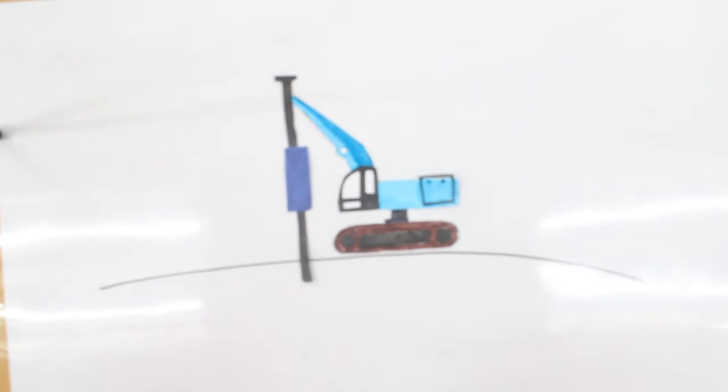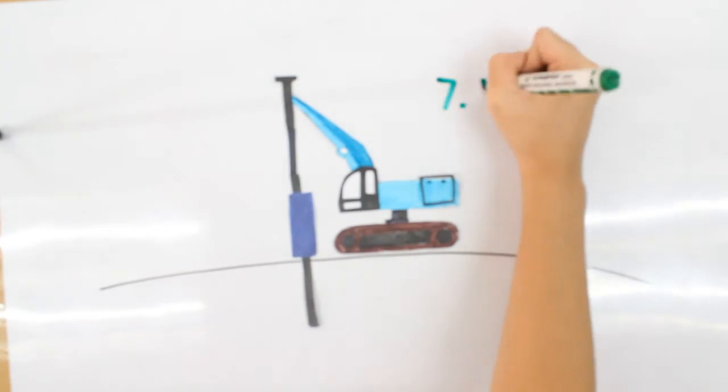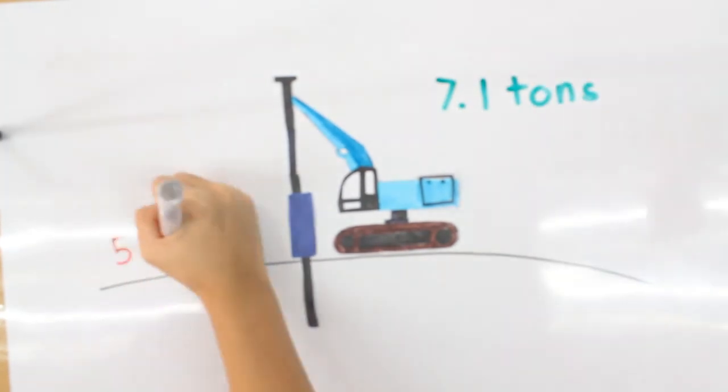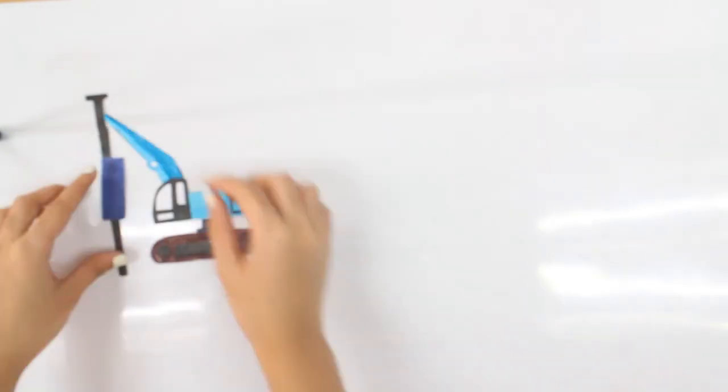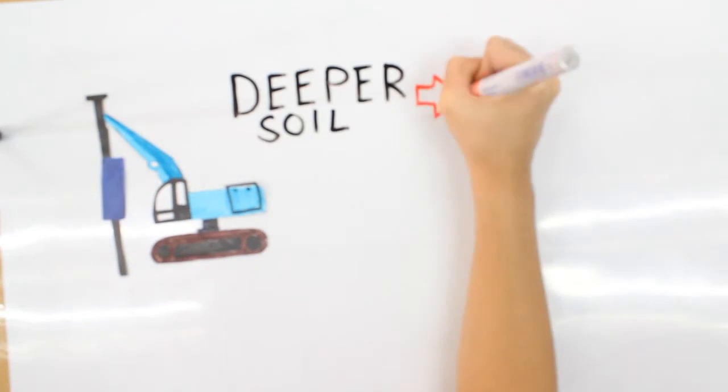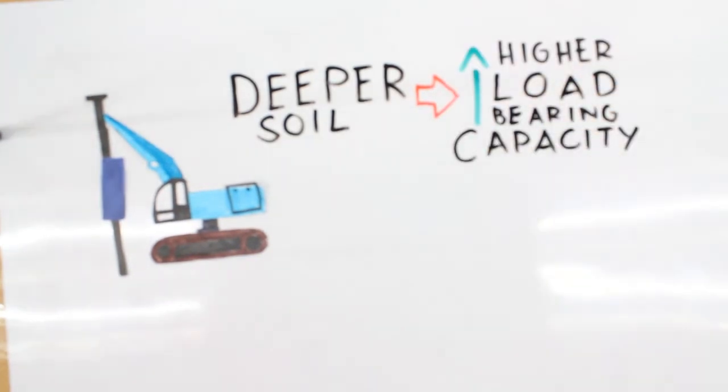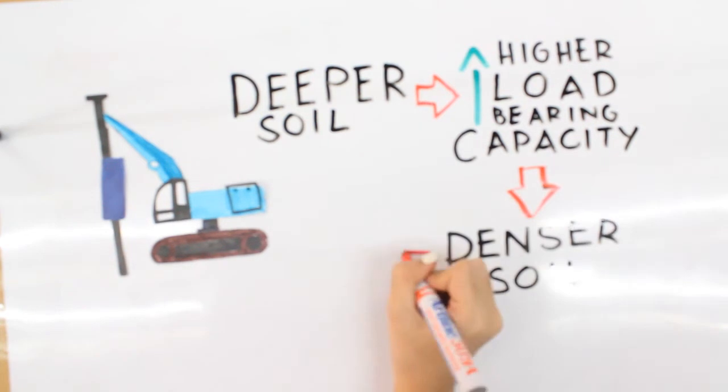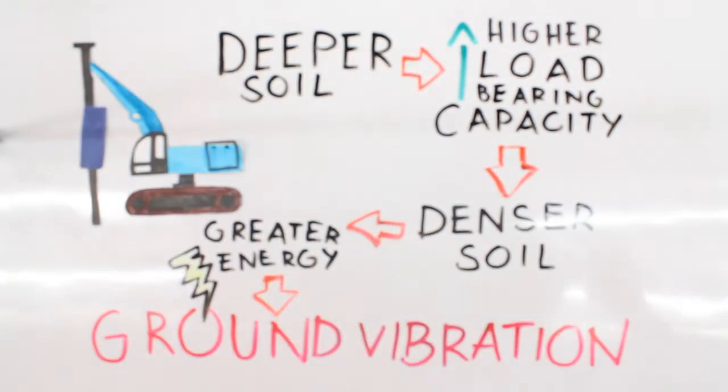The impact hammer pounds the pile to the earth without mercy where its 7.1 ton ram slams down at the rate of 5 blows per foot. Abuse from the hammer is not the only thing that the pile must withstand. Deeper soil produces higher load-bearing capacity having denser soil which leads to greater energy inducing ground vibrations.